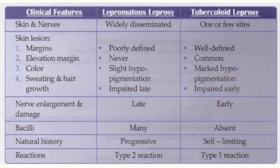Elevated margins never occur in lepromatous leprosy but are common in tuberculoid leprosy. The lesion color is slightly hypopigmented in lepromatous and markedly hypopigmented in tuberculoid. Sweating and hair growth are impaired late in lepromatous but early in tuberculoid. Nerve enlargement and damage are late in lepromatous and early in tuberculoid. Many bacilli are present in lepromatous, while bacilli are absent in tuberculoid leprosy.